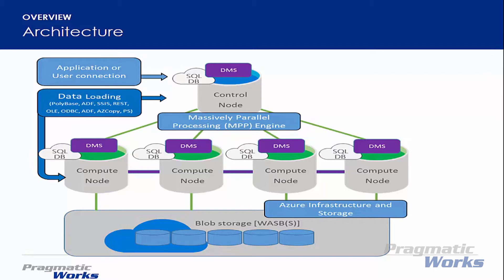An MPP system executes queries across a distributed system where different computers called nodes cooperate to give you the answers to your queries. Azure SQL Data Warehouse is split into multiple machines and relies upon distributed storage. It uses multiple machines to compute the answers to your queries, which is also known as distributed compute.